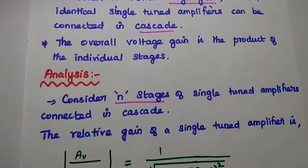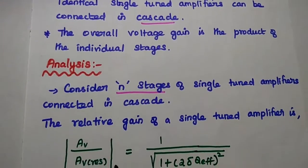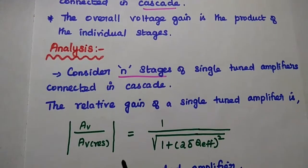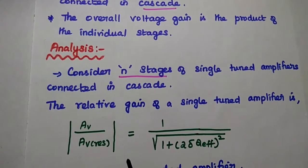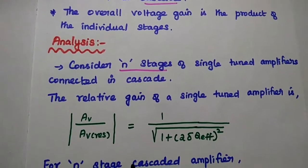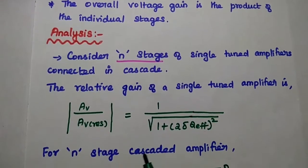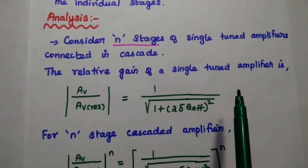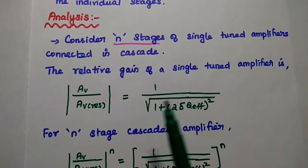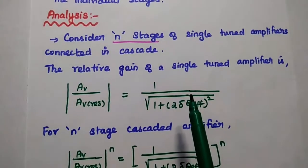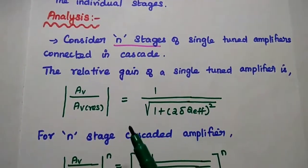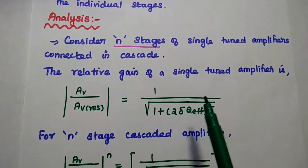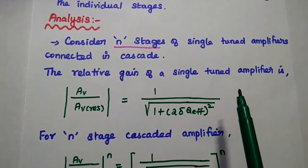Next we are going to analyze the effect of cascading on the bandwidth. For that we can consider n stages of single-tuned amplifiers connected in cascade, and consider the relative gain of a single-tuned amplifier.